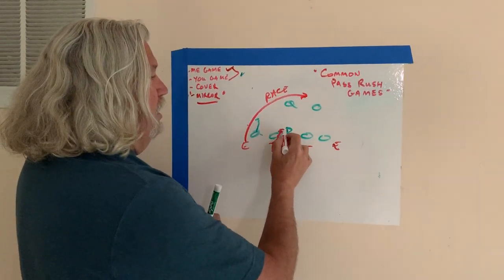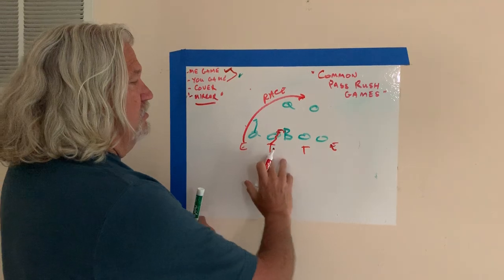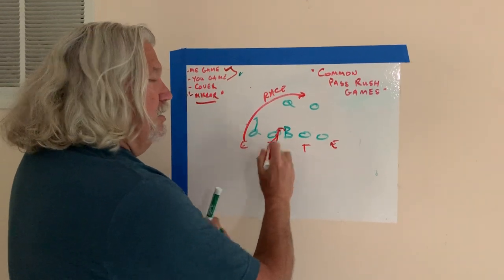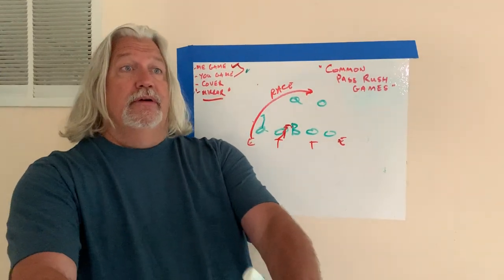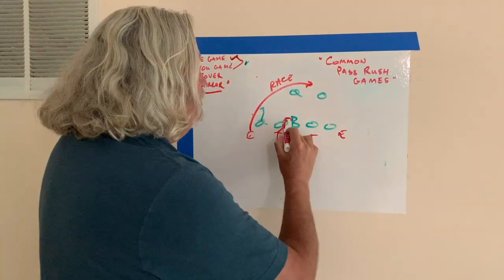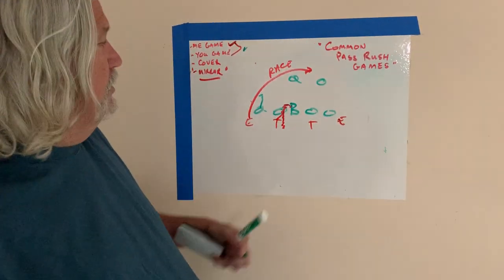This tackle here will bull rush his way in, collapse in the pocket, trying to get the double team, and then he'll pop his hands out. And now he's there to mirror you. He's there to mirror.